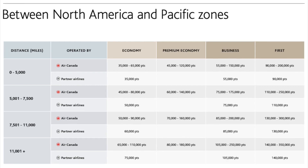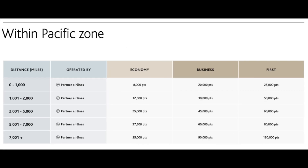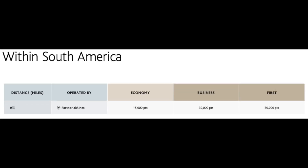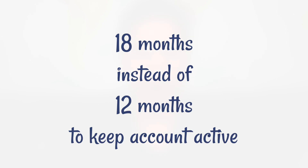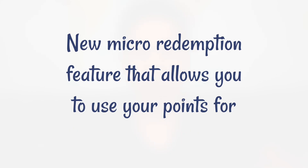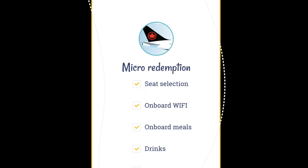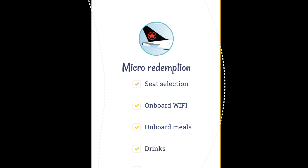There is now a total of 10 different travel zone combinations when you make a redemption, and that also excludes the class of service — whether you choose to fly economy, premium economy, business class, or first class. You now have 18 months instead of 12 months to keep your account active, and there's also a new micro redemption feature that allows you to use your points for seat selection, onboard Wi-Fi, and onboard meals and drinks.